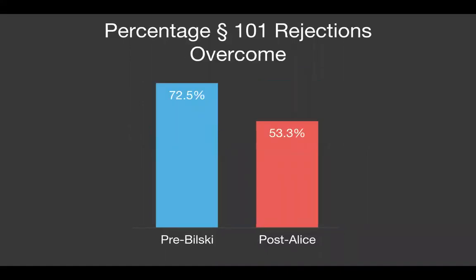A 101 rejection is considered overcome if the next office action is either a notice of allowance or another rejection that does not cite the same rejection basis as the previous office action. For example, if an applicant receives a final rejection citing sections 101 and 103, the applicant responds with an RCE, and the next rejection only cites 103 — we would assume the RCE was successful at overcoming the 101 rejection. The percentage of successfully overcome 101 rejections has dropped from 72.5% before Bilski to 53.3% after Alice, meaning far fewer applicants are getting over these rejections than they used to.